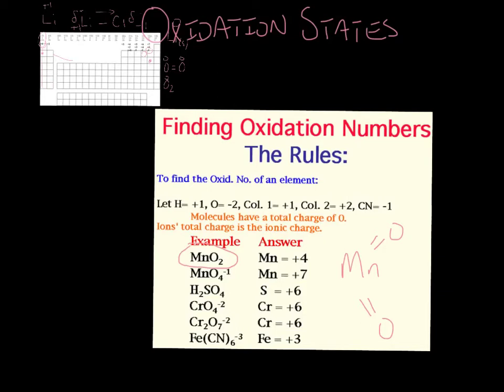Which means that the oxygen is more electronegative, so it's going to pull electrons towards it. It's going to pull two electrons towards it, giving it a negative two charge. Negative two charge on both sides. And because four electrons went away, it's going to have a partial positive, but it's going to be a plus four on the manganese.